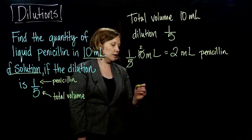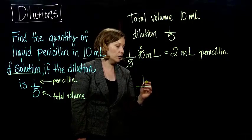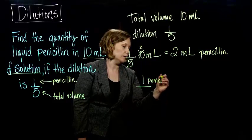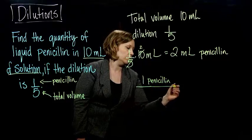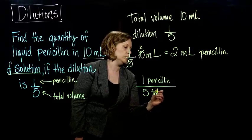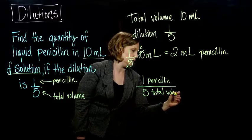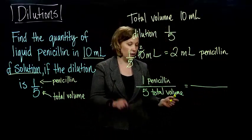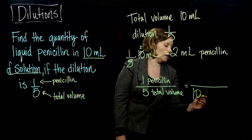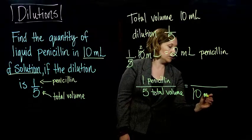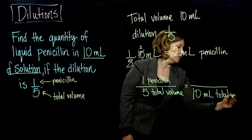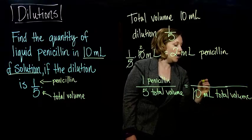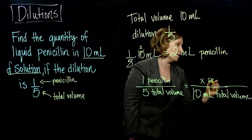So I know that I have one part penicillin to five parts total volume, equals - my new total volume needs to be 10 milliliters total volume. And then I don't know the amount of penicillin. That's what I'm trying to find.